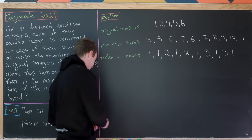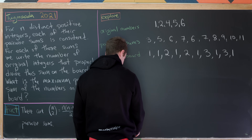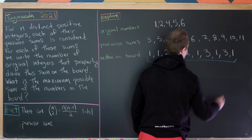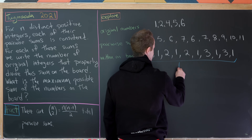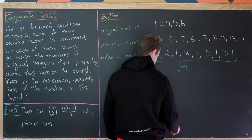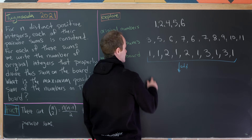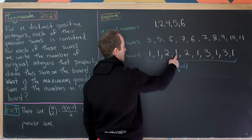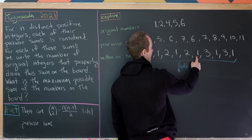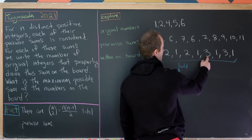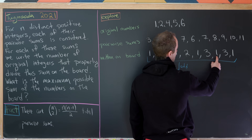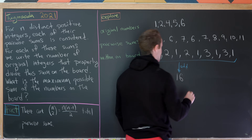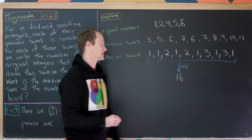Now let's add all of these numbers, since that's our final goal. Adding them up: 1+1=2, +2=4, then 5, 6, 7, 8, 11, 12, 13, 16. So we add them all up and we get 16.